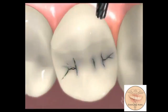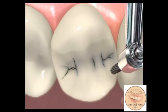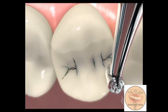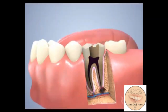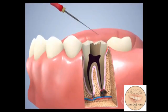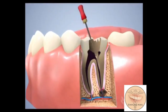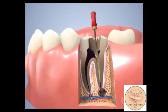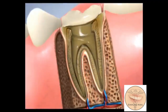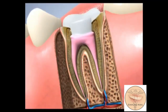The procedure begins by drilling a hole in the chewing surface of the tooth to gain access to the pulp chamber. Once exposed, the soft tissue is completely removed, and the canals are shaped using a series of files. The hollow canals are then filled with an inert pink polymer called gutta percha.